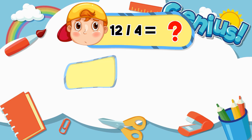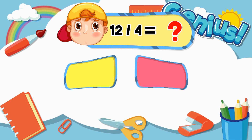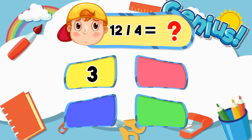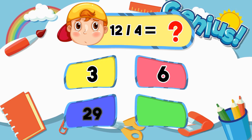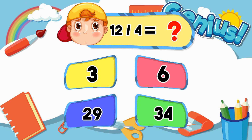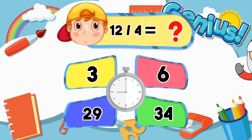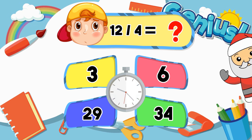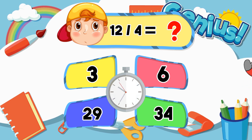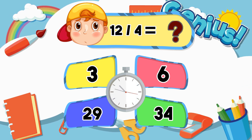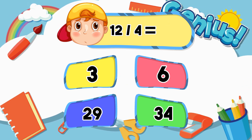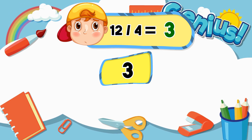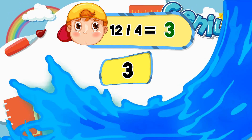What is twelve divided by four? Three. Six. Twenty-nine. Thirty-four. Four. Three. Three.